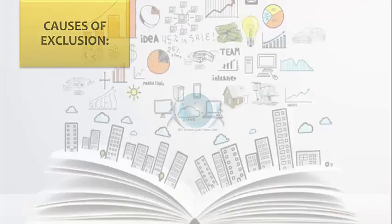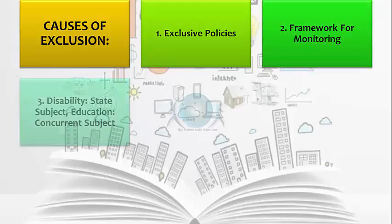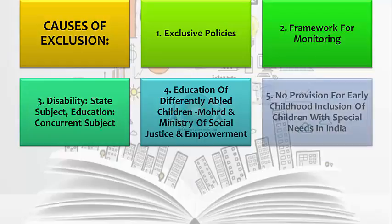PWDs suffer from exclusion and are not included in many developmental aspects. The causes for this exclusion include exclusive policies and a weak framework for monitoring. Disability is a state subject and education is a concurrent subject, creating a division of obligations between central and state governments that leads to a dissipation of responsibilities for the welfare of disabled persons. Education for differently abled children is a responsibility split between the Ministry of HRD and the Ministry of Social Justice and Empowerment, creating ambiguity where coordination is required. There is also no provision for early childhood inclusion of children with special needs in India.